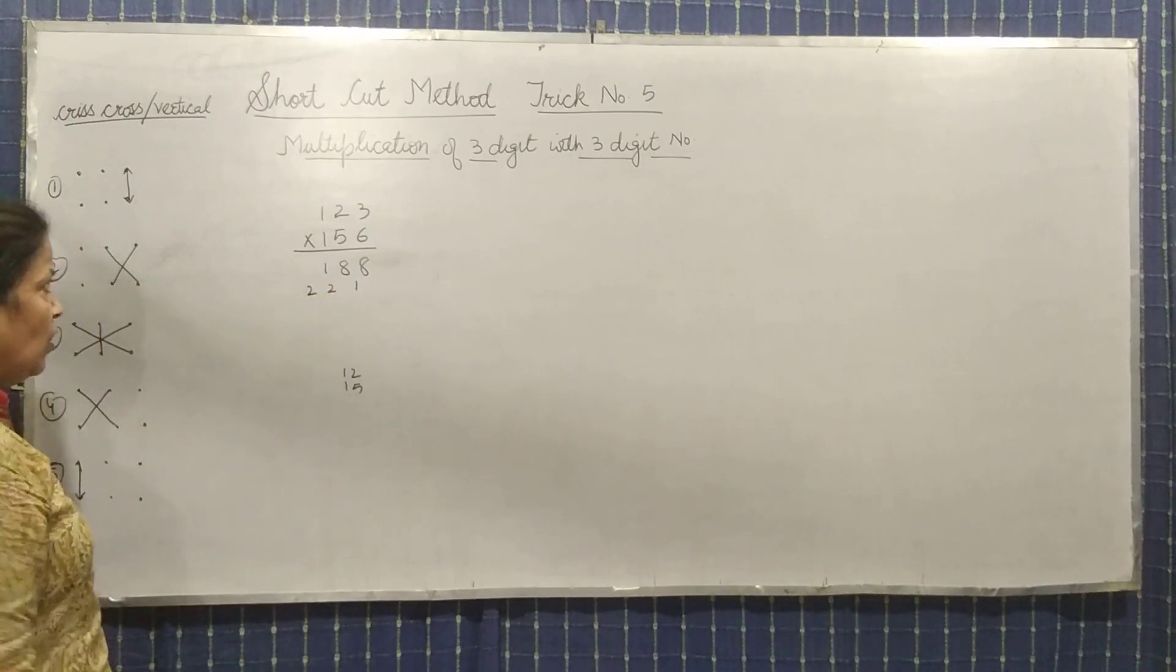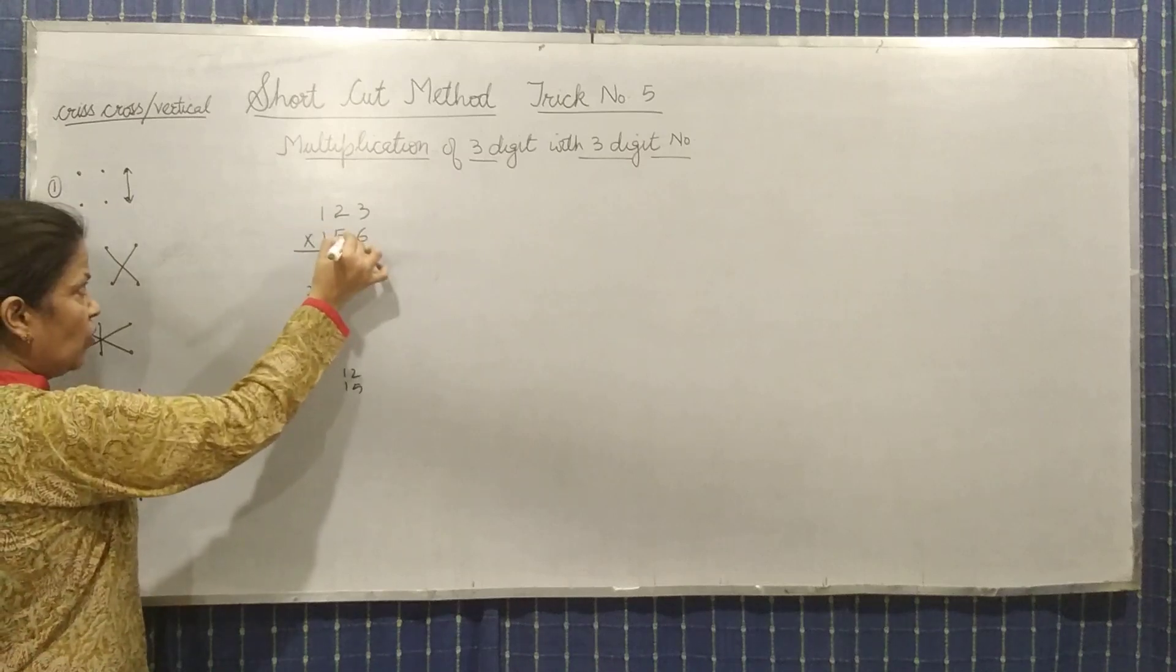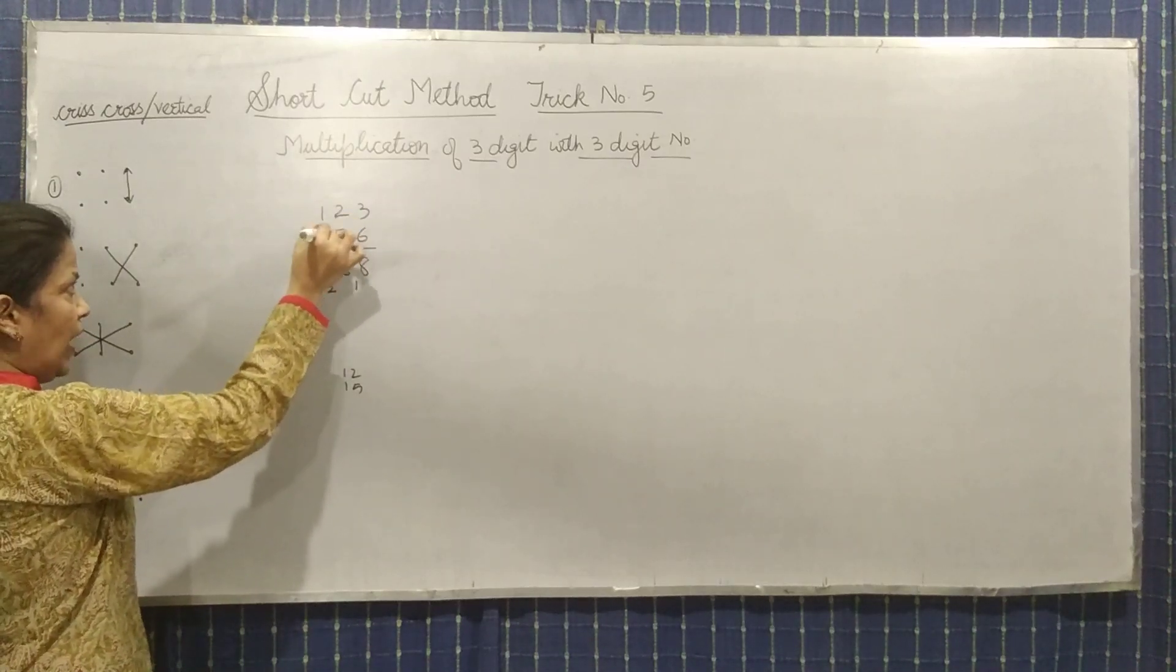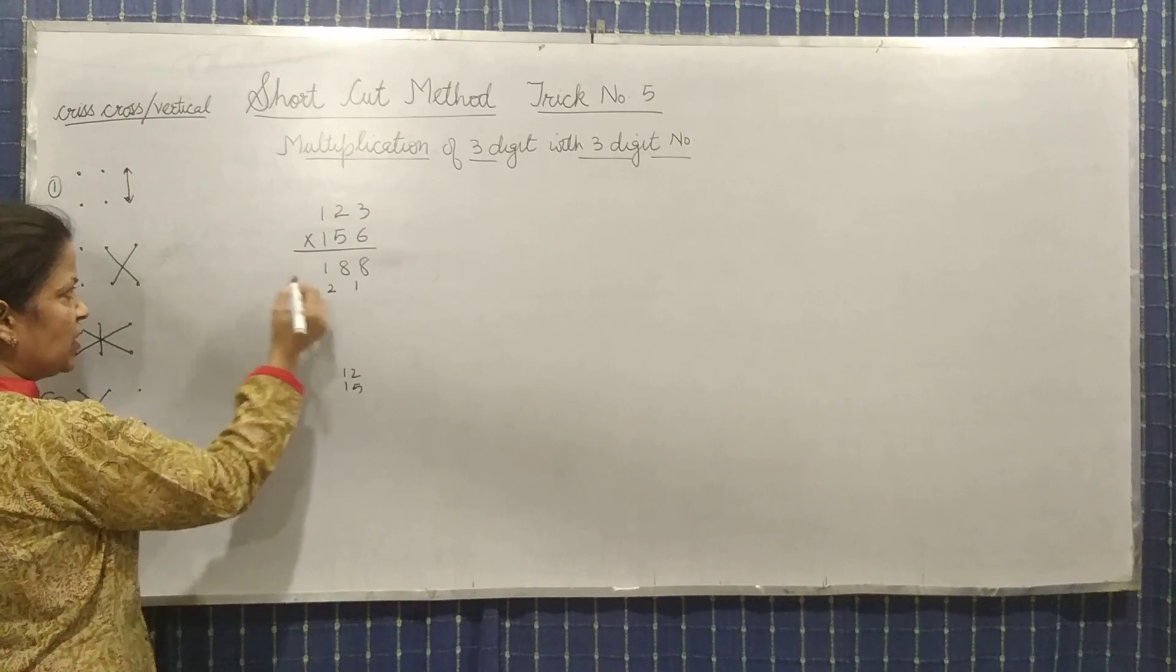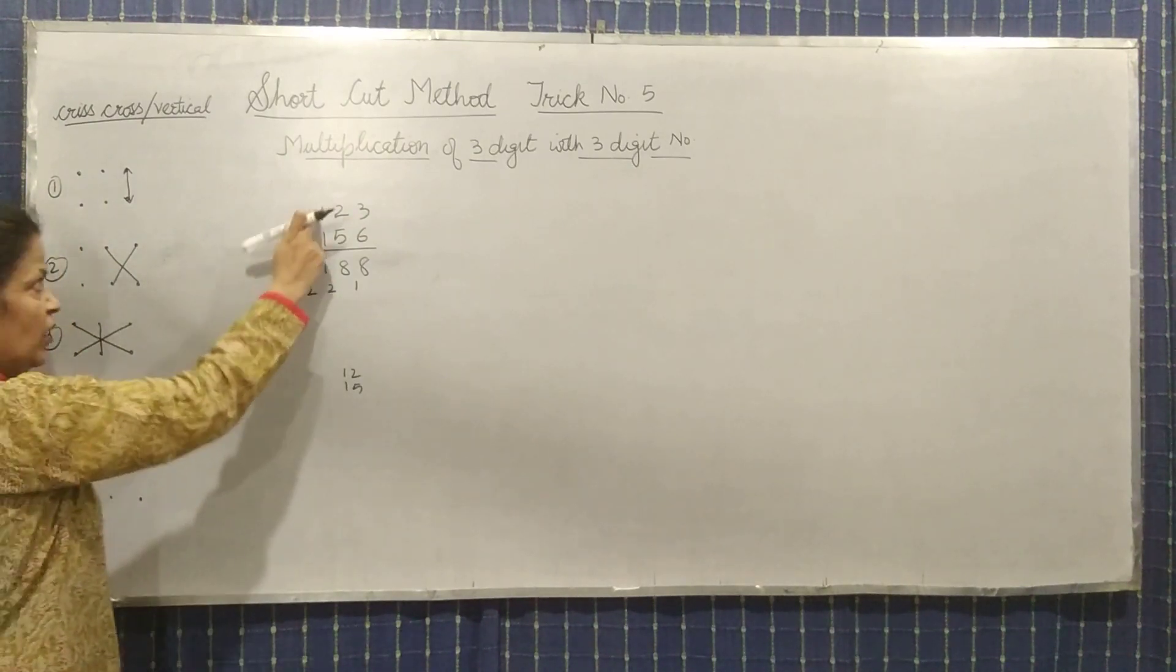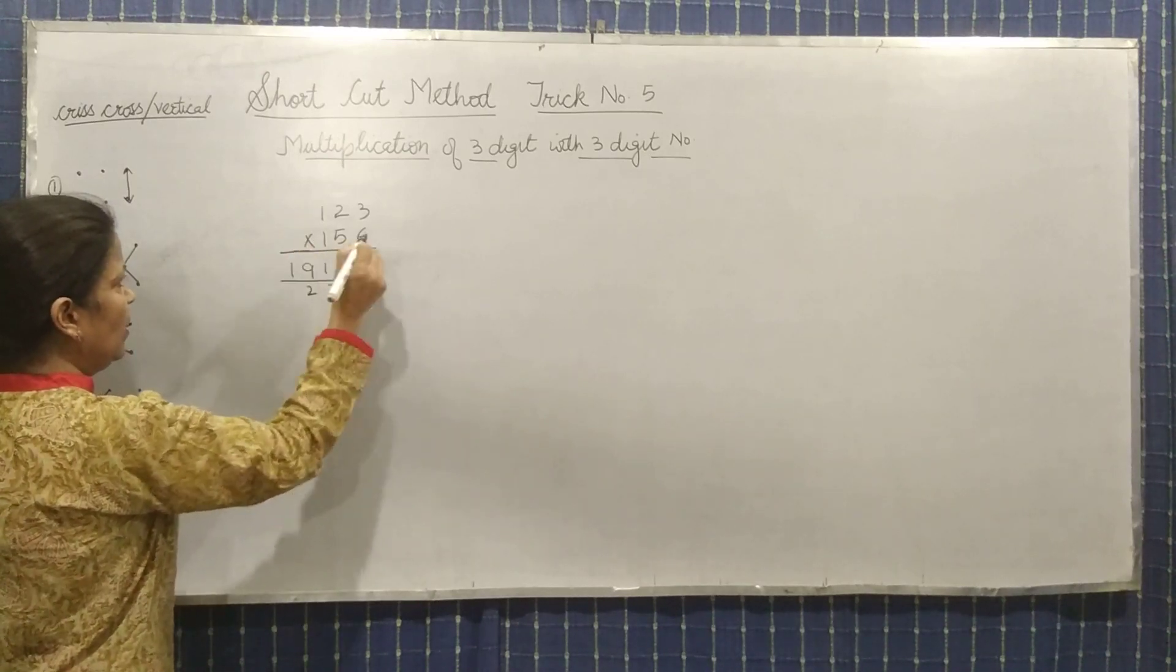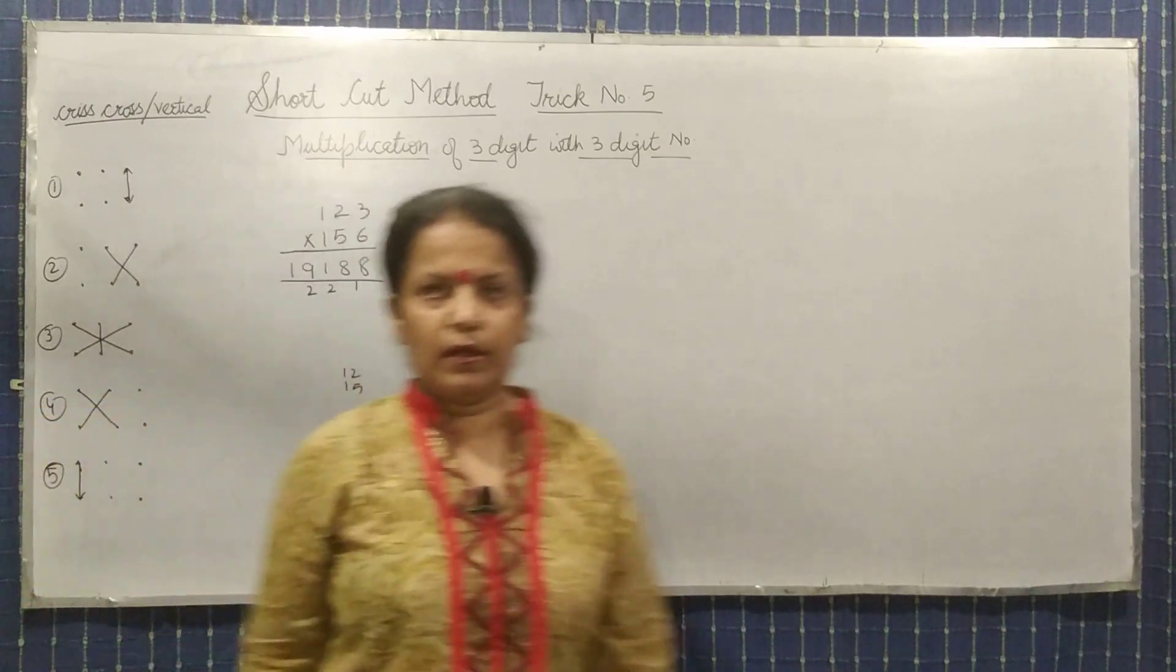What should be the next step? Fourth step - cross multiply these two. Five and two is seven, plus two is nine. Now last step, multiply these two, so it will be one. So this is the answer. Clear?